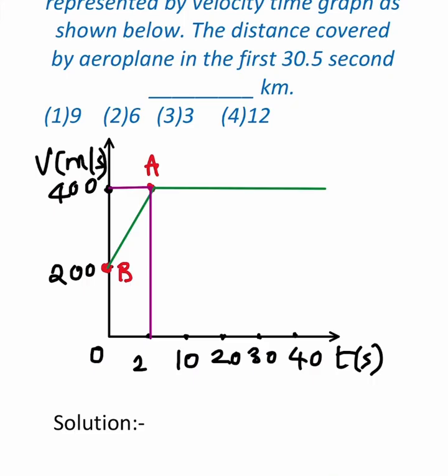Here is the twist. You can clearly see this is the graph what they have given. In the graph they have given velocity in meters per second and time in seconds, but they asked the question in kilometers.